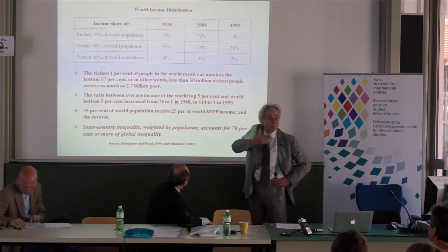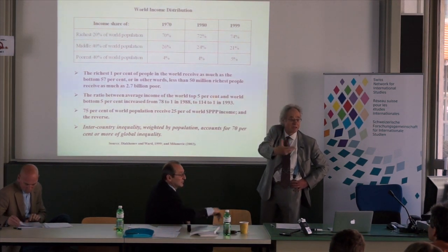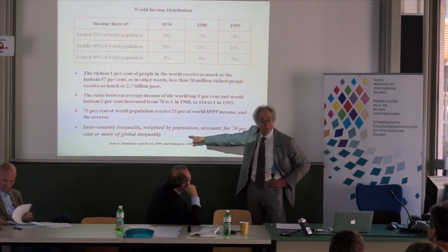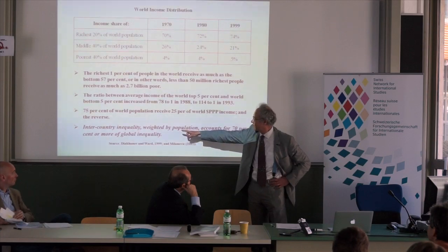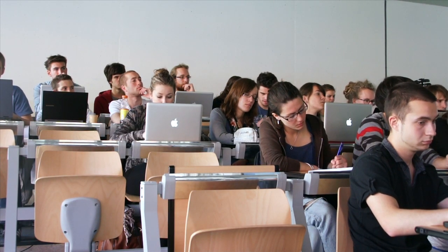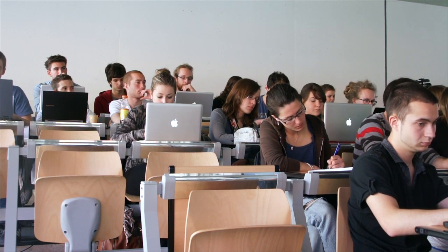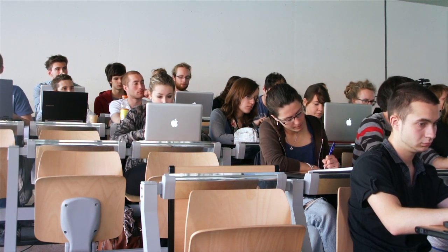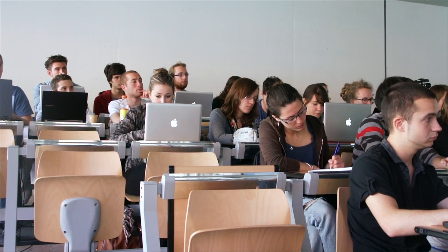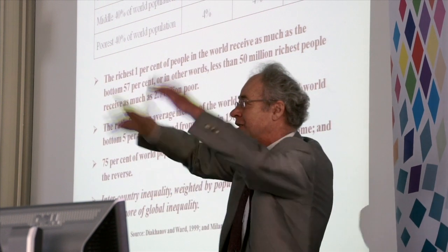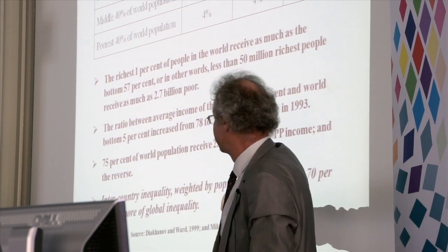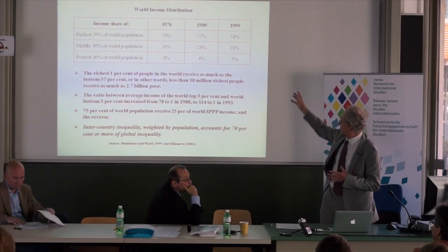This is just becoming visible because people are starting to measure global income inequality. This is very important as well: inter-country inequality weighted by population accounts for 70% or more of global inequality. So global inequality is taking the inequalities between all people everywhere — inter-country and within-country — and 70% is due to inter-country differences.